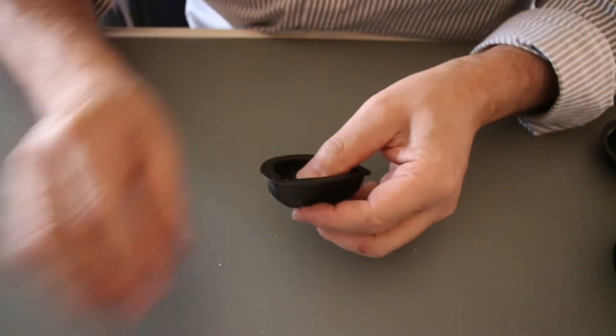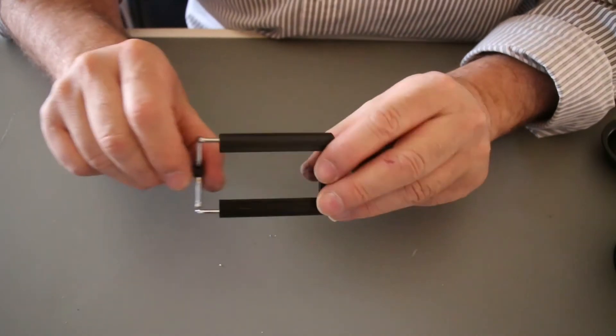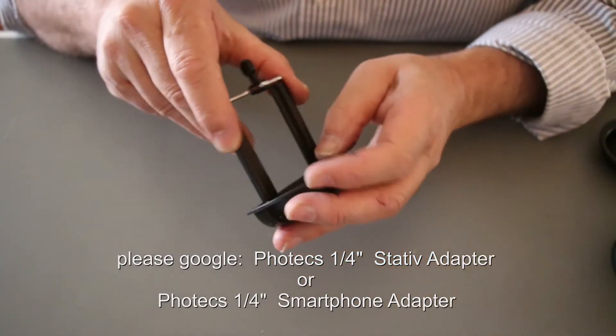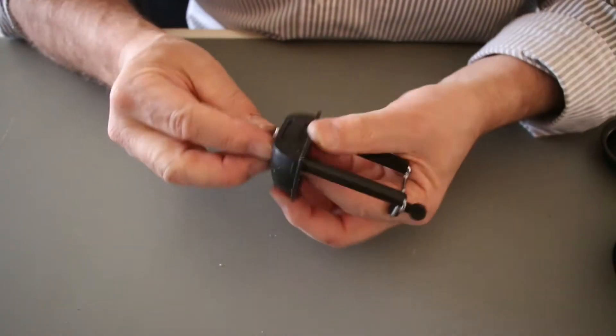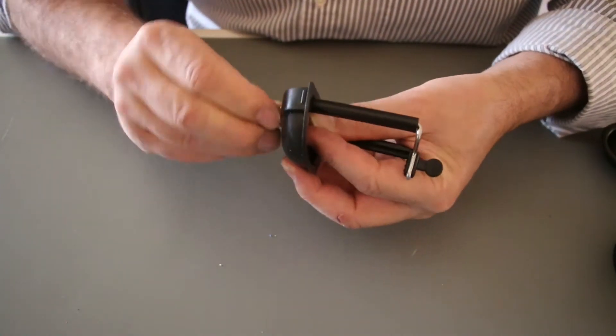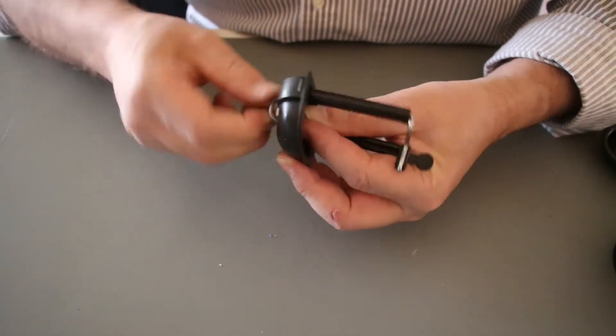The next thing you need is a Vortex smartphone tripod adapter. It fits perfectly. Now put the tripod adapter into the rubber mount and fix it with the camera screw.